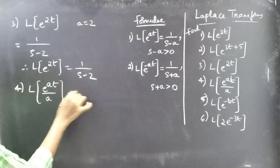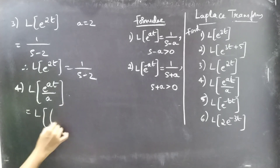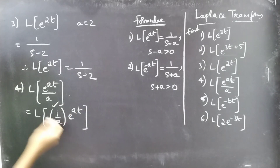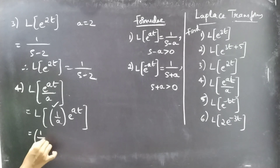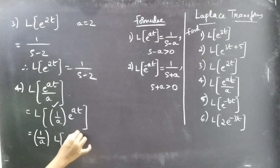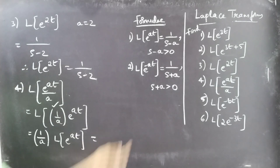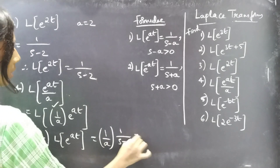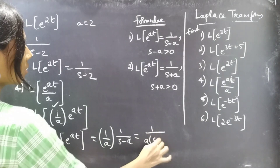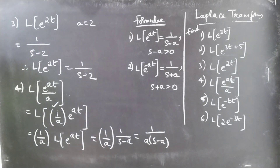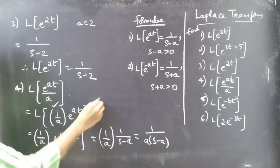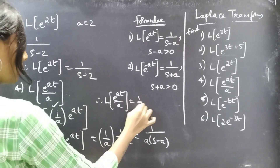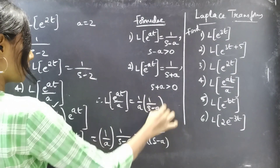Coming to the fourth one: L{e^(at)/a}. Here a is constant, so we write this as 1/a × L{e^(at)}. Since L{e^(at)} = 1/(s-a), we get 1/a × 1/(s-a). Therefore L{e^(at)/a} = 1/[a(s-a)].